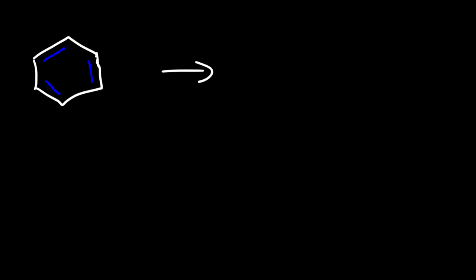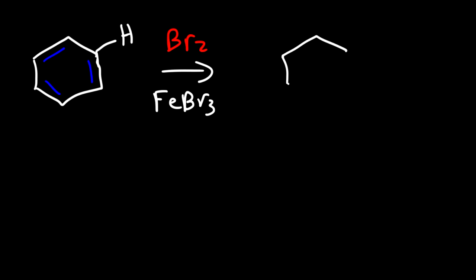Now let's go over the bromination of benzene. Here we have a benzene ring and we're going to react it with Br2 and with a Lewis acid catalyst called FeBr3, iron(III) bromide. We're going to replace the hydrogen atom with an electrophile — in this case, the electrophile is the bromine atom. And so that's how we can convert benzene into bromobenzene.